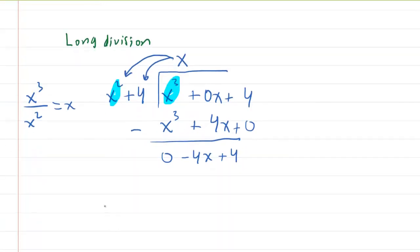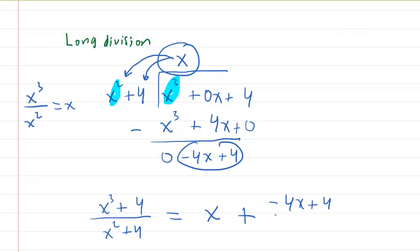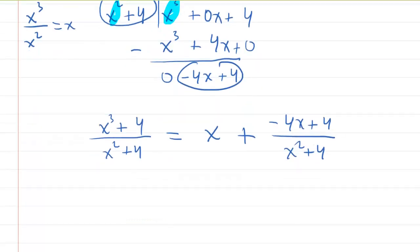So what does this mean? It means that the expression x cubed plus 4 divided by x squared plus 4 equals your quotient, which is x plus the remainder of negative 4x plus 4 over the divisor, which is x squared plus 4. So that does complete the simplification or the long division. We can actually perhaps factor out this negative sign.